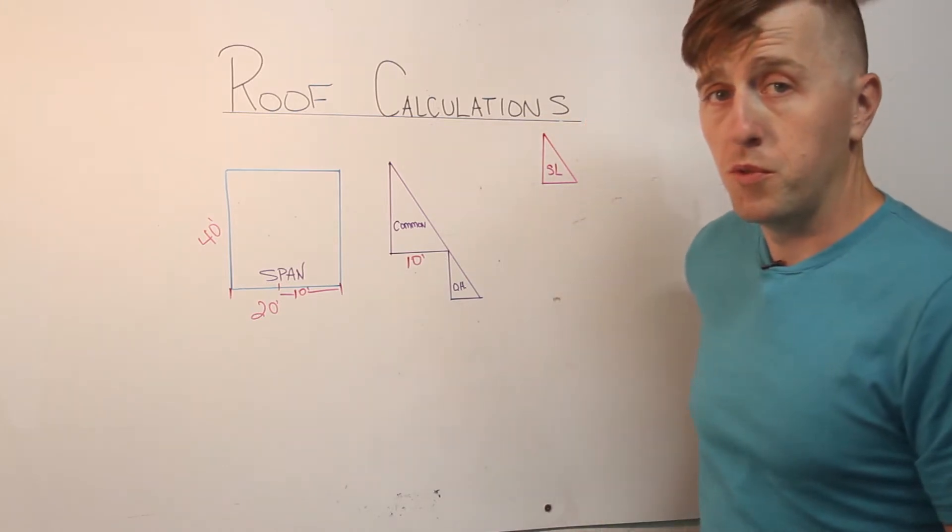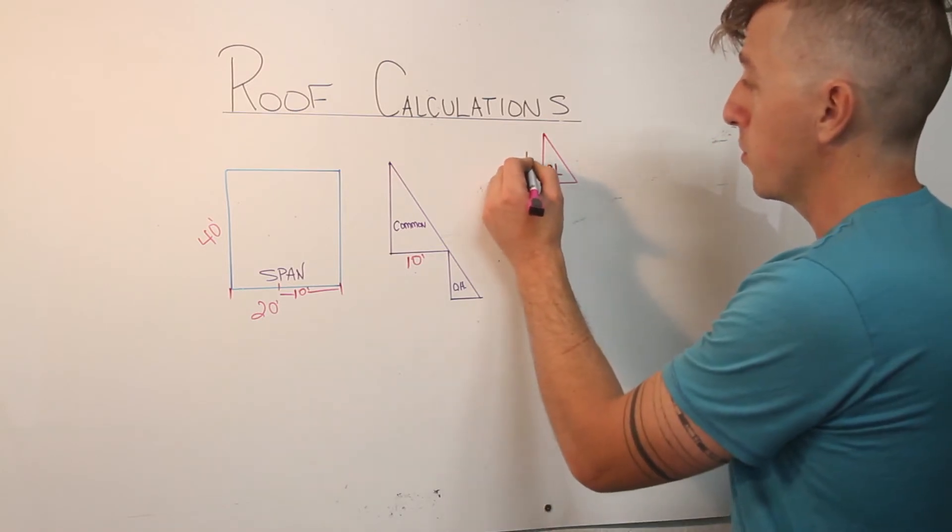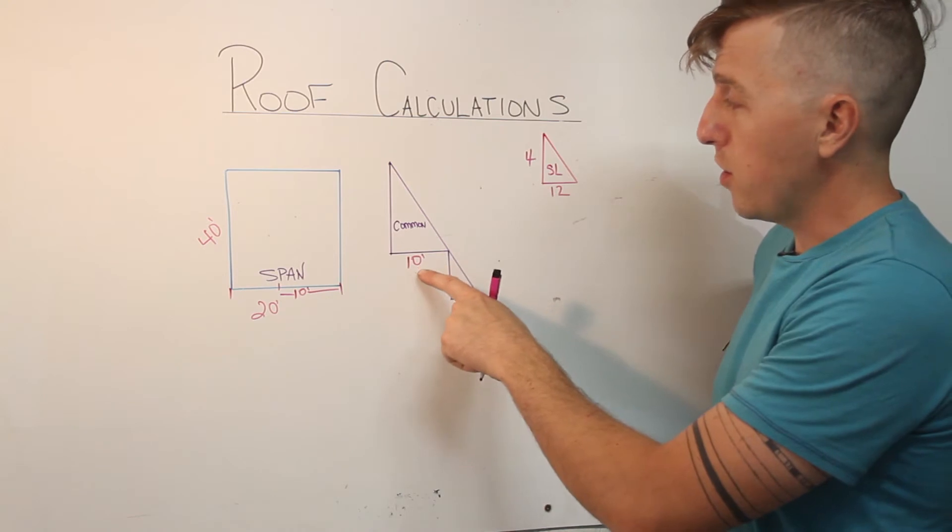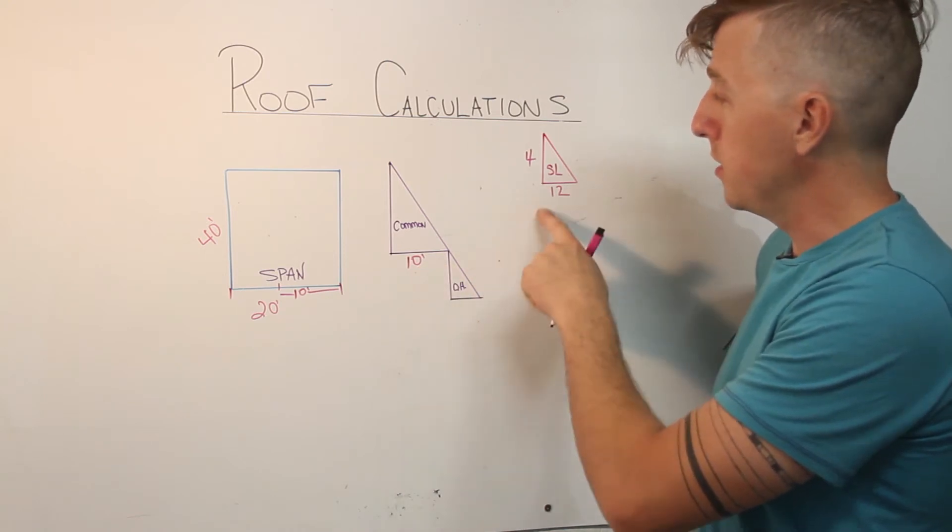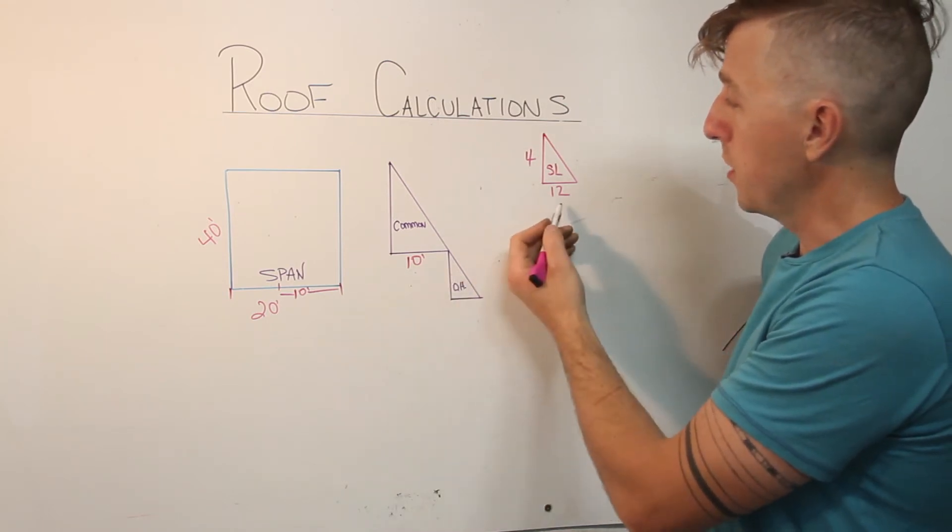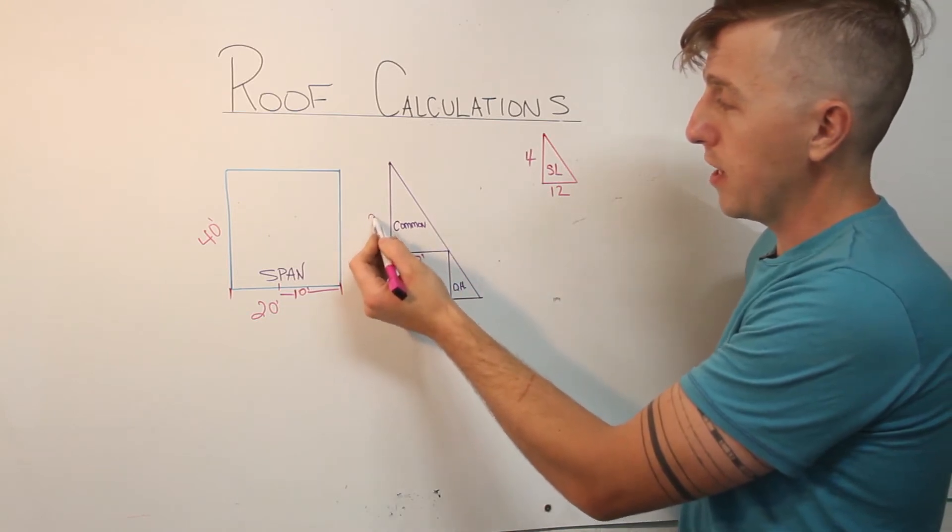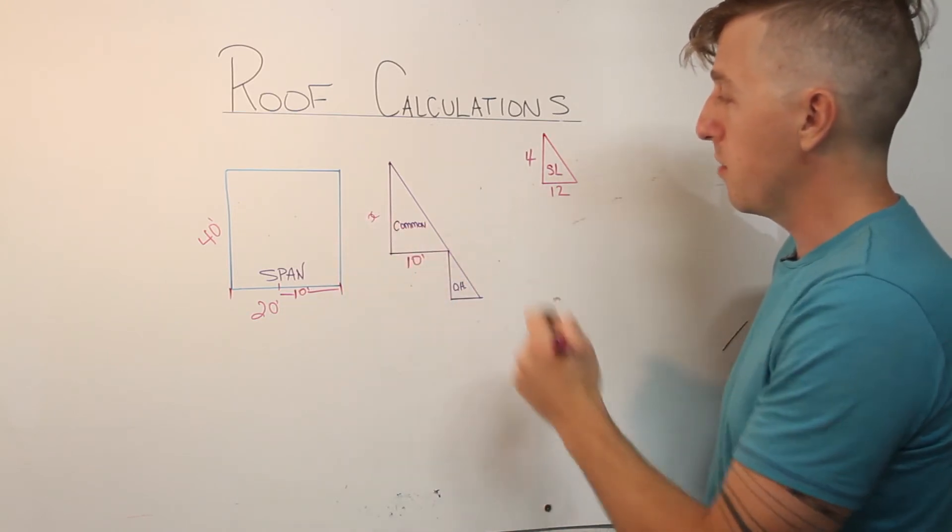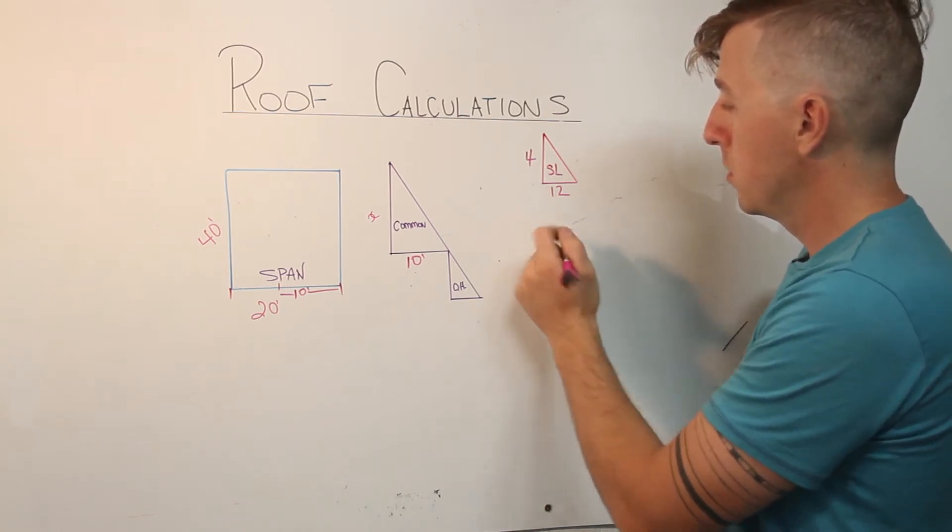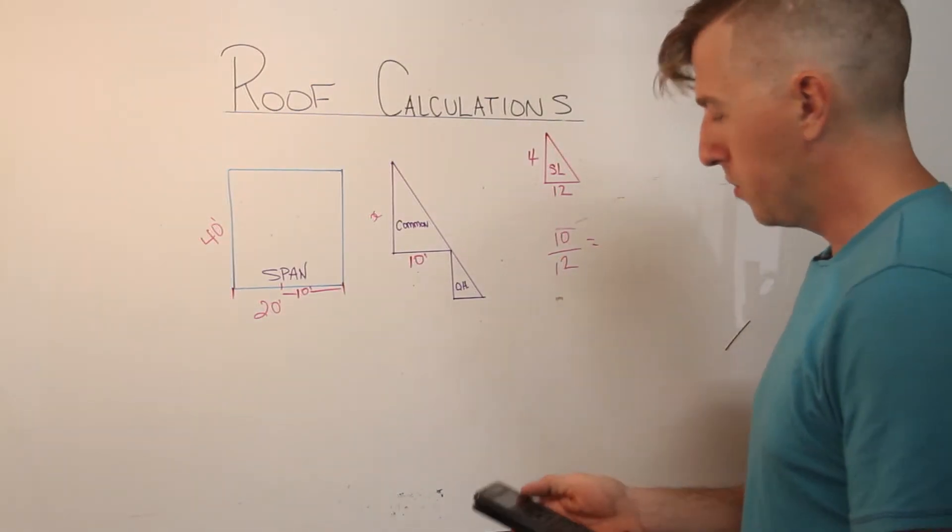This is when we start to do ratio and proportion with our slope triangle. So let's pretend that we have a 4-12 slope. So we know that our common rafter needs to be relational to the slope triangle. So the 10 is related to the 12 as the 4 is related to x over here. So all we need to do is 10 divided by 12, which is 0.83.